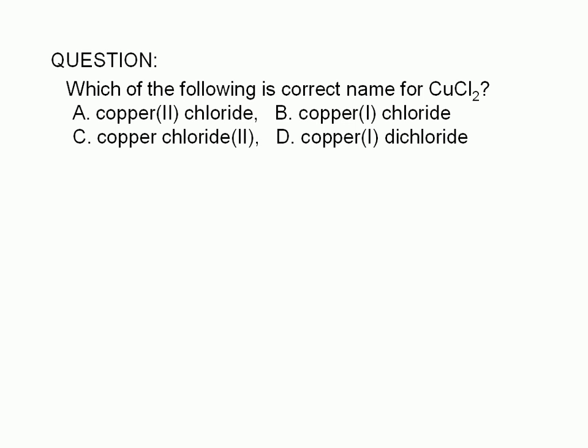To name a compound given its formula, we need to first classify the compound, then apply the rule for that type of compound. CuCl₂ is an ionic compound. We know it's ionic because copper is a metallic element and chlorine is a non-metallic element.